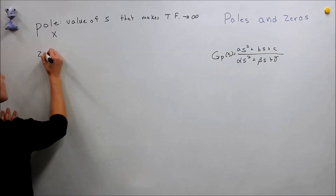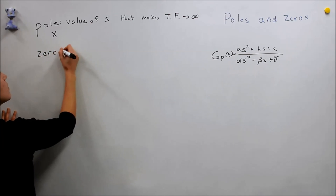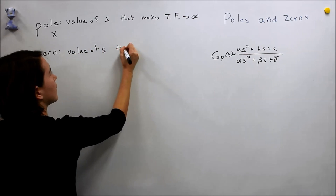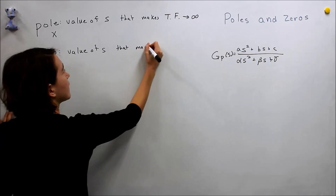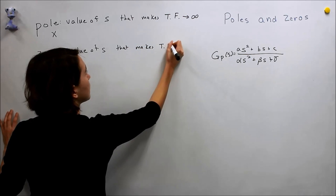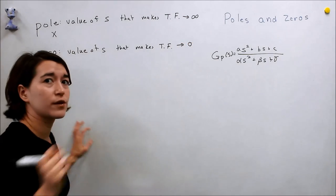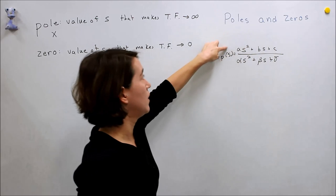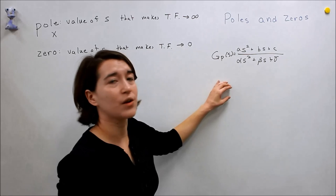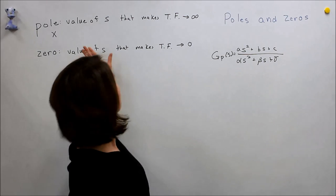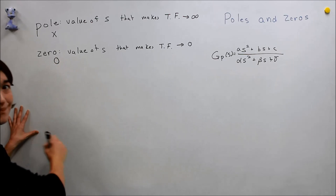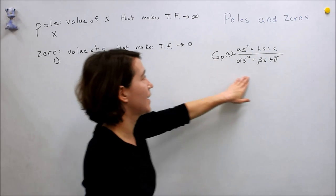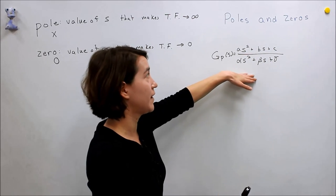And then the zeros are essentially the opposite. It is the value of s that makes the transfer function go to zero. So essentially it's going to be the roots of the numerator here. So the value of s that makes this become zero, that's the zero. And we denote that as a circle. And then the poles are the values of s that make this expression, the denominator, zero.